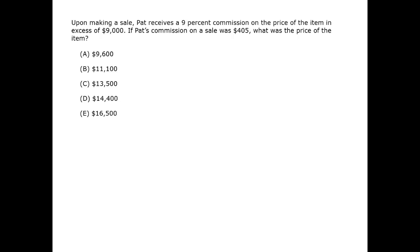In this question, if we call the price of the item sold P, then the excess of $9,000 of that price is P minus 9,000.